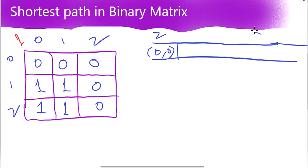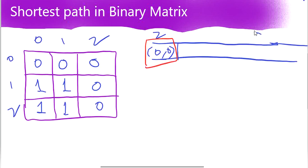If it is a 1 then it is not a valid case — the first cell itself is blocked and we cannot move further. If it is a 0 then we are going to traverse and find all its neighbors, which are the values present in all eight directions. Why 8? Because we can traverse even diagonally. So we pull the element 0,0 from the queue and populate all its neighbors and put them in the queue.